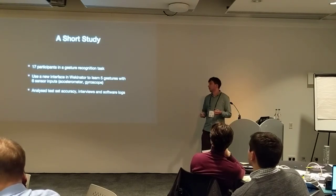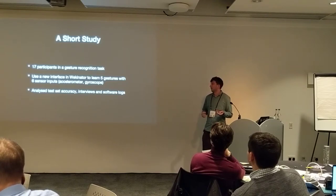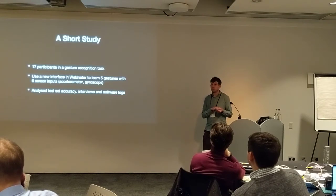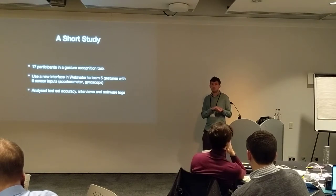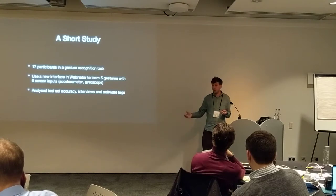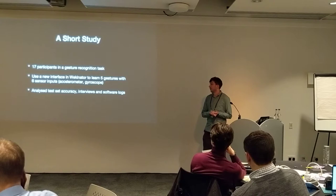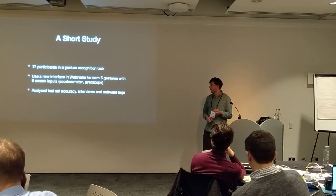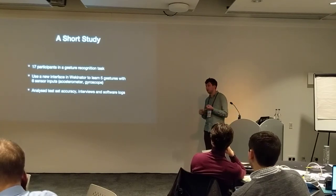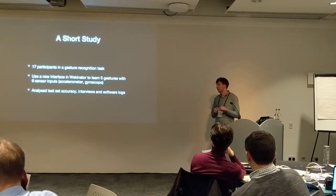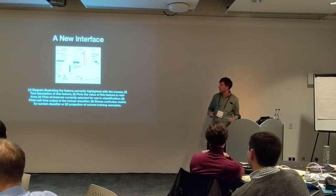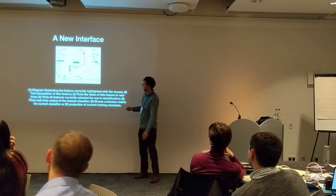We conducted a short study where we took 17 participants and got them to use the Wekinator interface. We gave them six inputs — that's three degrees of acceleration and three axes of the gyroscope — and gave them 20 minutes to learn five gestures using a feature engineering interface we built on to work in Wekinator. We recorded a separate test set so we could do a clean evaluation, and also did a short interview and analysed the software logs. I'll quickly show you the new interface that we built.